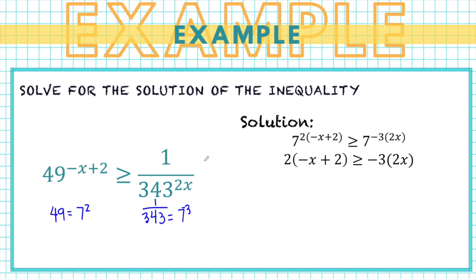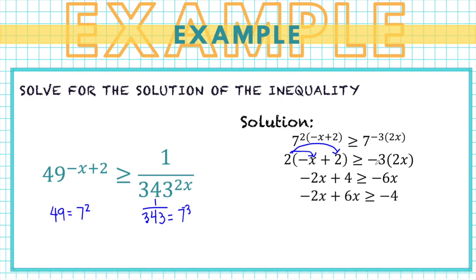Distributing gives negative 2x plus 4 greater than or equal to negative 6x. Isolating x by adding 6x and subtracting 4 from both sides gives negative 2x plus 6x greater than or equal to negative 4, so 4x greater than or equal to negative 4. Dividing both sides by 4 gives the solution x greater than or equal to negative 1.